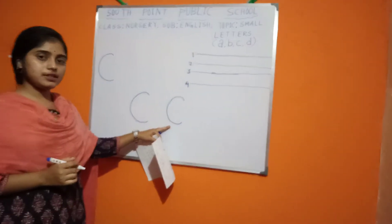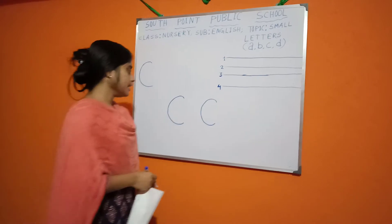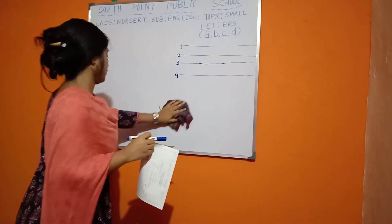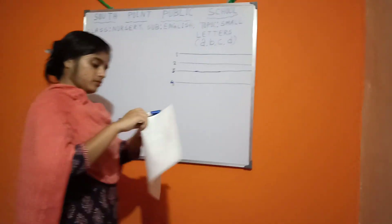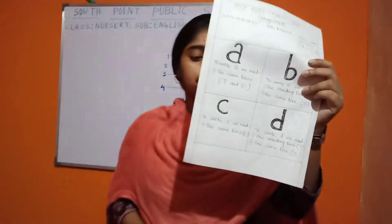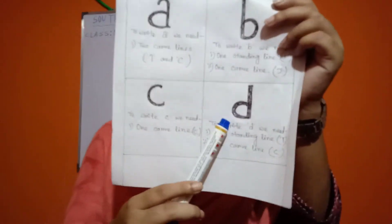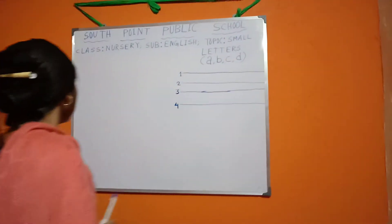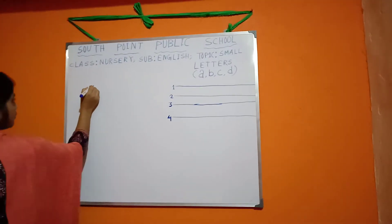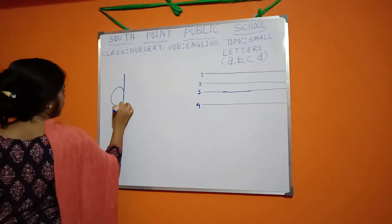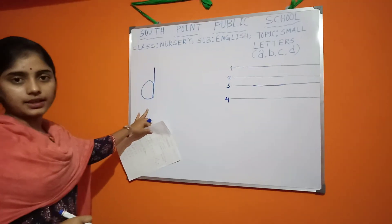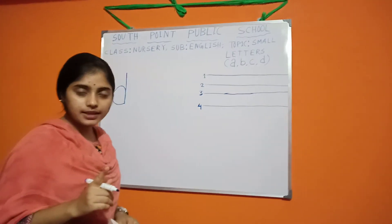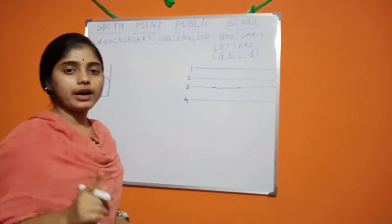Next, D. This is D. This is D. To write D, we need one standing line and one curved line, like B.